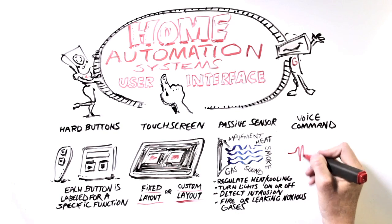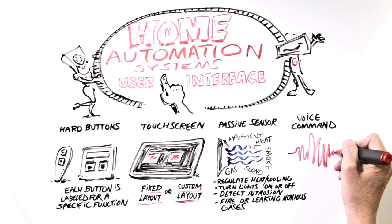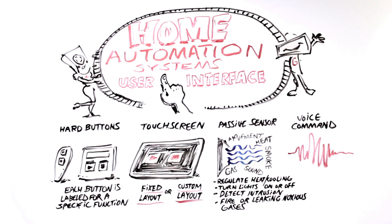The last type of user interface is a voice command user interface. Systems with this capability are just beginning to appear in the marketplace. Many of us already have this functionality on our cell phones, so it won't be long before they'll become a more common option in home automation systems.